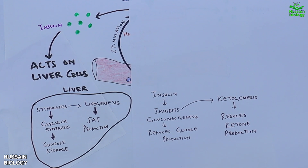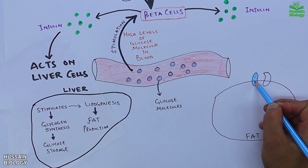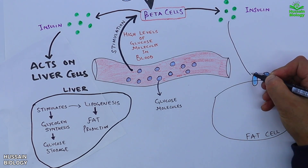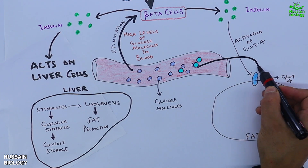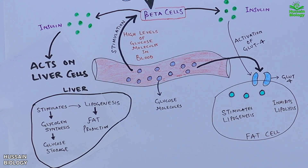Insulin also targets the fat cells. Insulin targets the GLUT4 channels on fat cells and activates them. On activation of GLUT4 channels, glucose molecules from the circulation are taken up by the fat cells, as shown in the animation. Additionally, insulin stimulates lipogenesis and inhibits lipolysis in the fat cells.